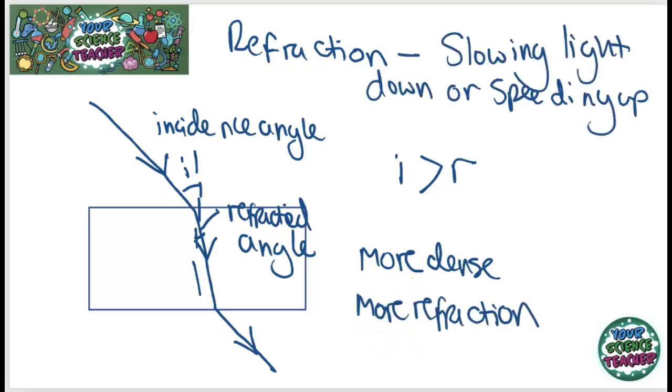It's important to take into account refraction in our everyday lives. For example, if you are going spear fishing, you would have to make sure you took into account refraction when you throw the spear or you might miss the fish. This is because the actual location of the fish will look different to the position you see with your eyes because light slows down when it enters the water.